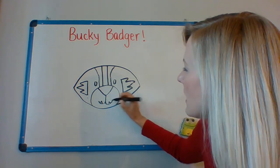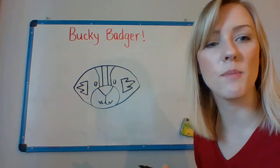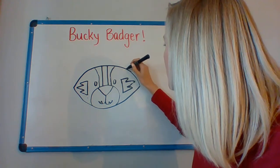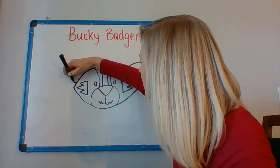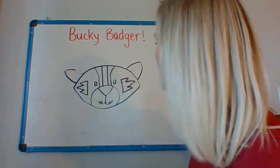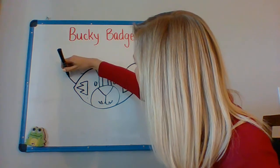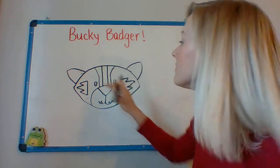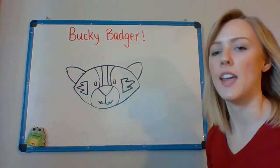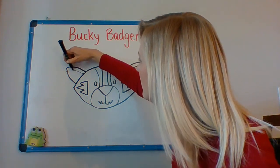Since he is Bucky Badger, we need to add some teeth, right there. And some ears — the ears, kind of like the nose, is going to be like a triangle but curved. On this side and on this side. It's all right if you make a mistake. I'm going to make that one a little bit bigger. So that they're kind of the same. And then I can add a little line right here and a little line right here.